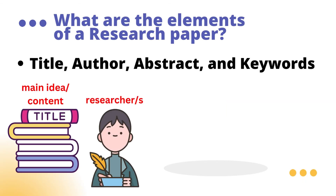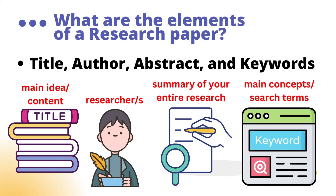The title, of course, depends on the topic that you worked on, and this can be found on the title page together with the authors or name of the researchers. While the abstract is the summary of your entire research paper, below or at the bottom part of your abstract are the keywords, which represent the main concepts of your research topic and are commonly called a search term.